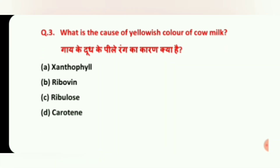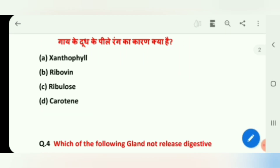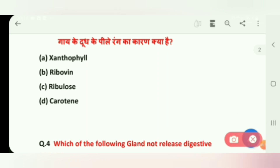What is the cause of the yellowish color of cow milk? Options are: Xanthophyll, Riboflavin, Ribulose, and Carotene. The answer is D, Carotene.